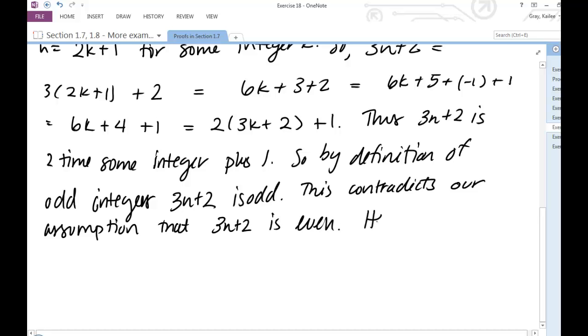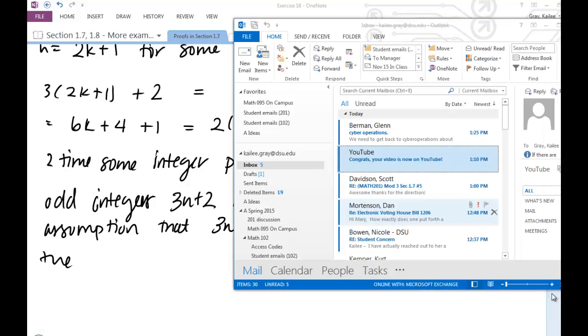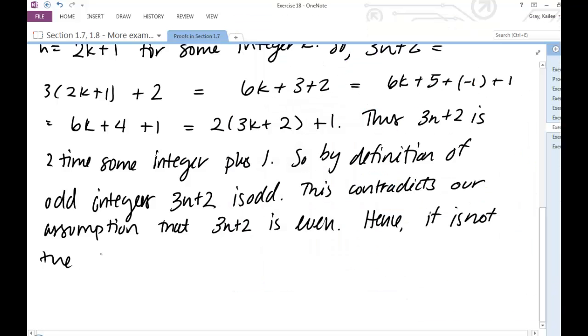Hence, it is not the case that 3n plus 2 is even, and n is odd.